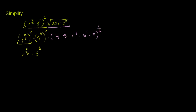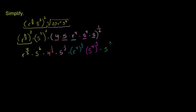And then we can raise each of these terms to the 1/2 power. So times 4 to the 1/2 times 5 to the 1/2, times r to the 4th to the 1/2 power, times s to the 4th to the 1/2 power, times s to the 1/2 power. The one thing that might jump out is that there are some perfect squares here and we're raising them to the 1/2 power — we're taking their square root. So let's simplify those.